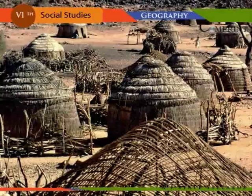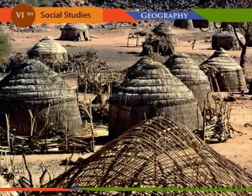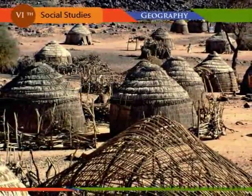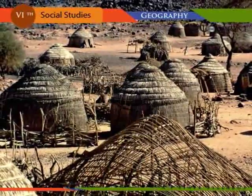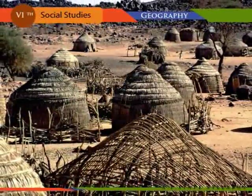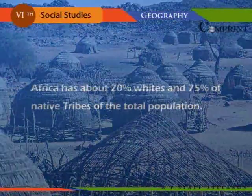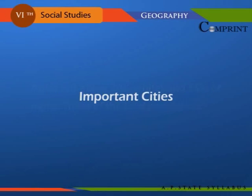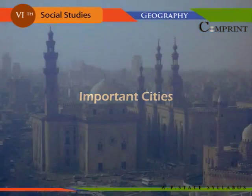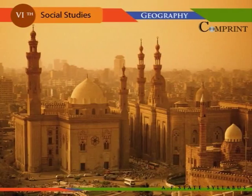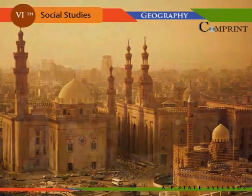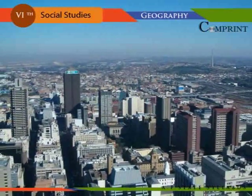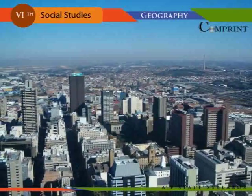Nigeria is the most populous country in Africa, with over 16 percent of the total population. Southern Nigeria is swampy. Africa has about 20 percent whites and 75 percent native tribes of the total population. The important cities in Africa are Cairo, Alexandria, Johannesburg, Pretoria, Kinshasa, Lagos, etc.